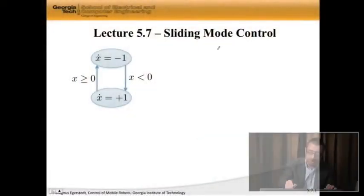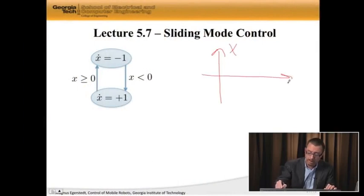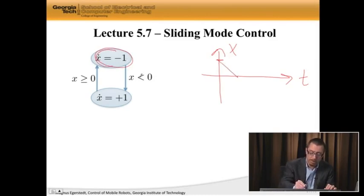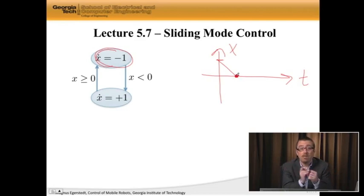Last time we saw that the Zeno problem, or the Zeno phenomenon, comes in two different flavors. Type 1 Zeno is infinitely many switches in zero time, or in one time instant. Here, represented by a system where if I have x and time, and I start positive, then x is going to be negative one until x becomes just negative, and then we get infinitely many switches going on right there. That's Type 1.